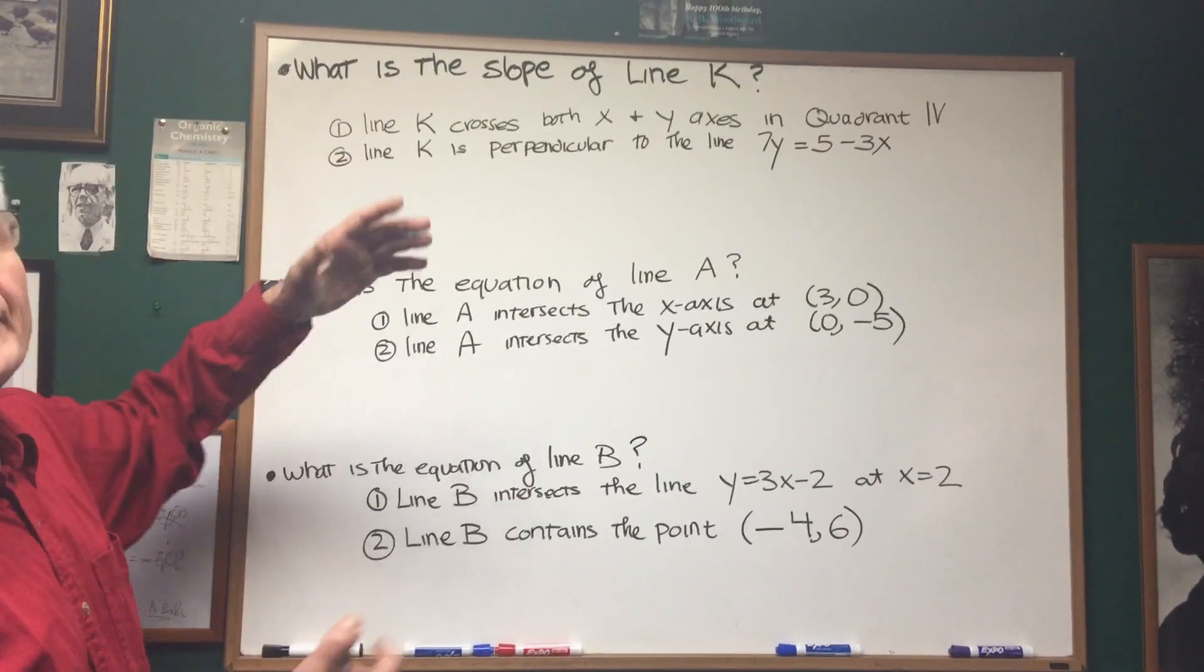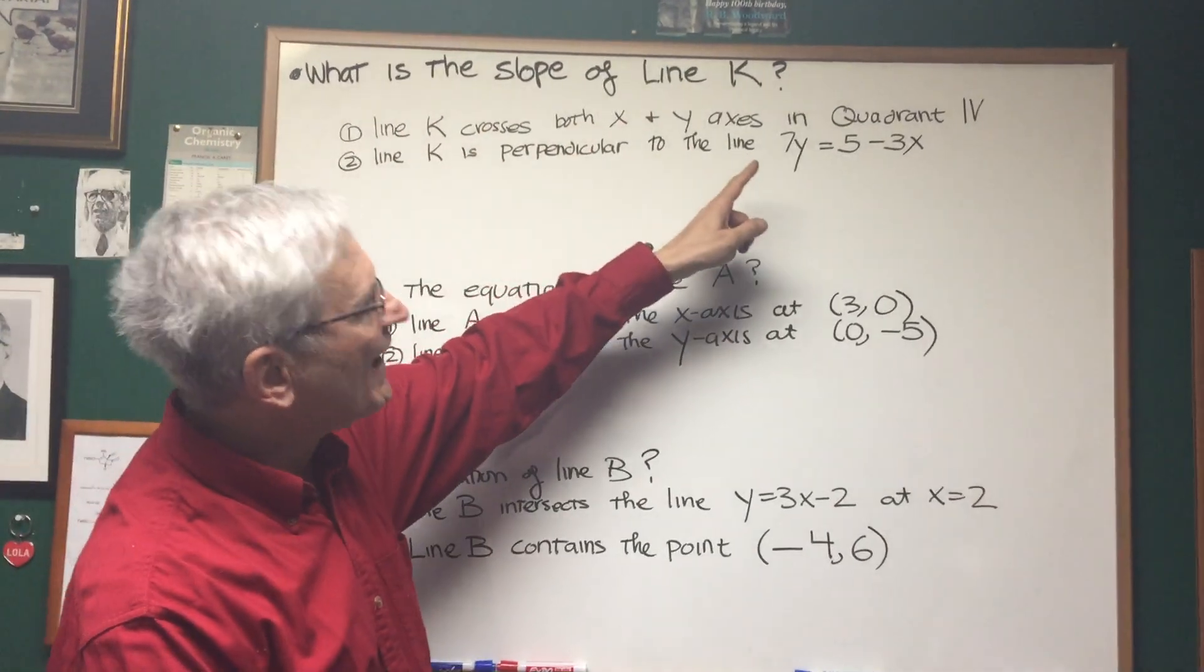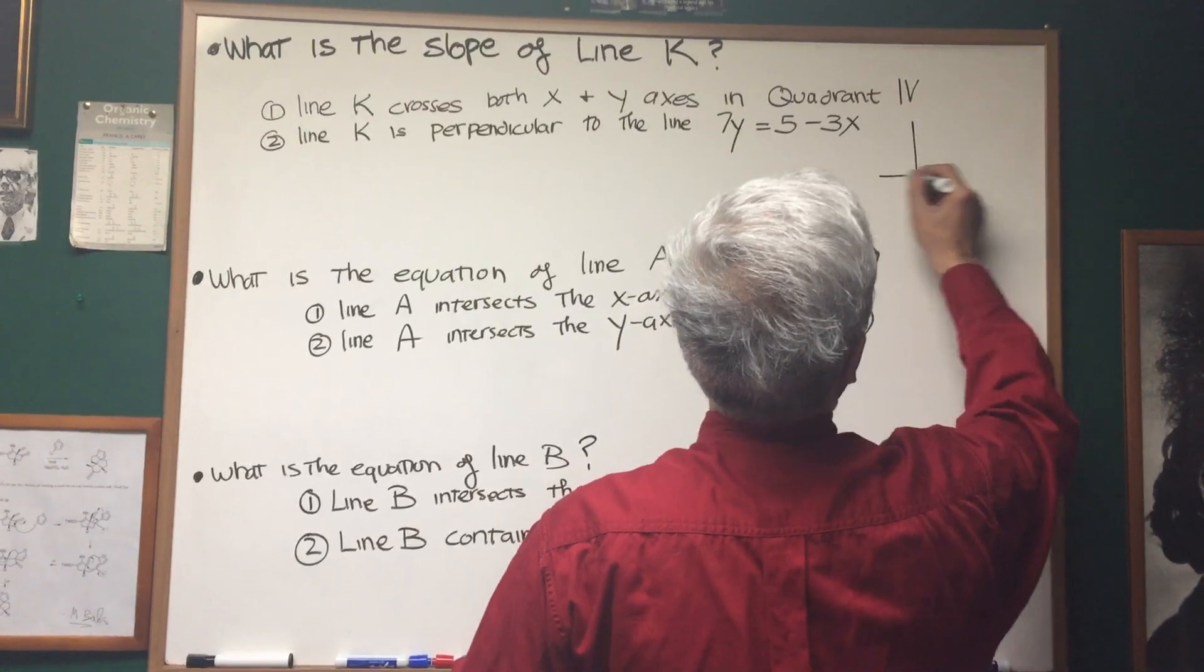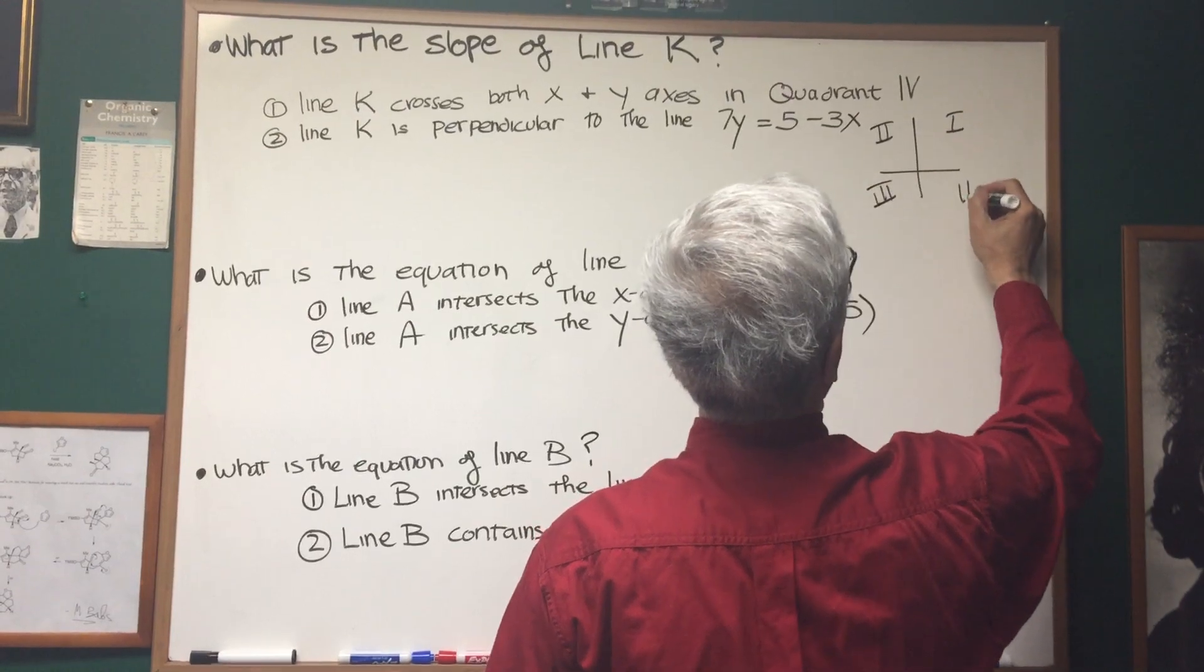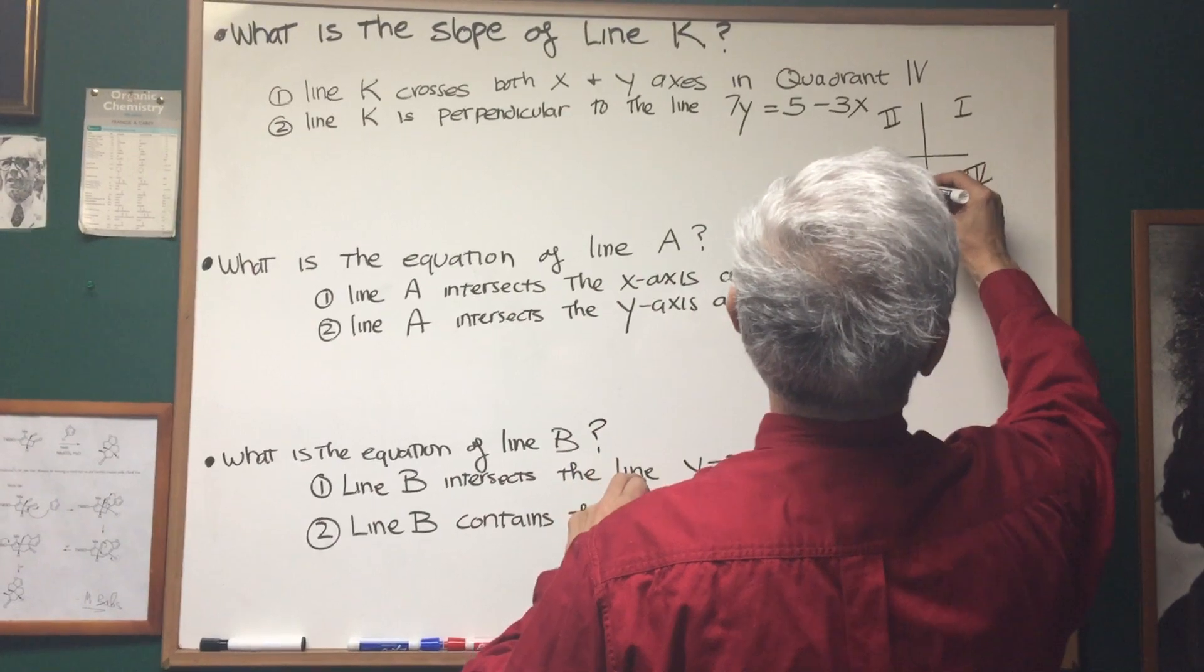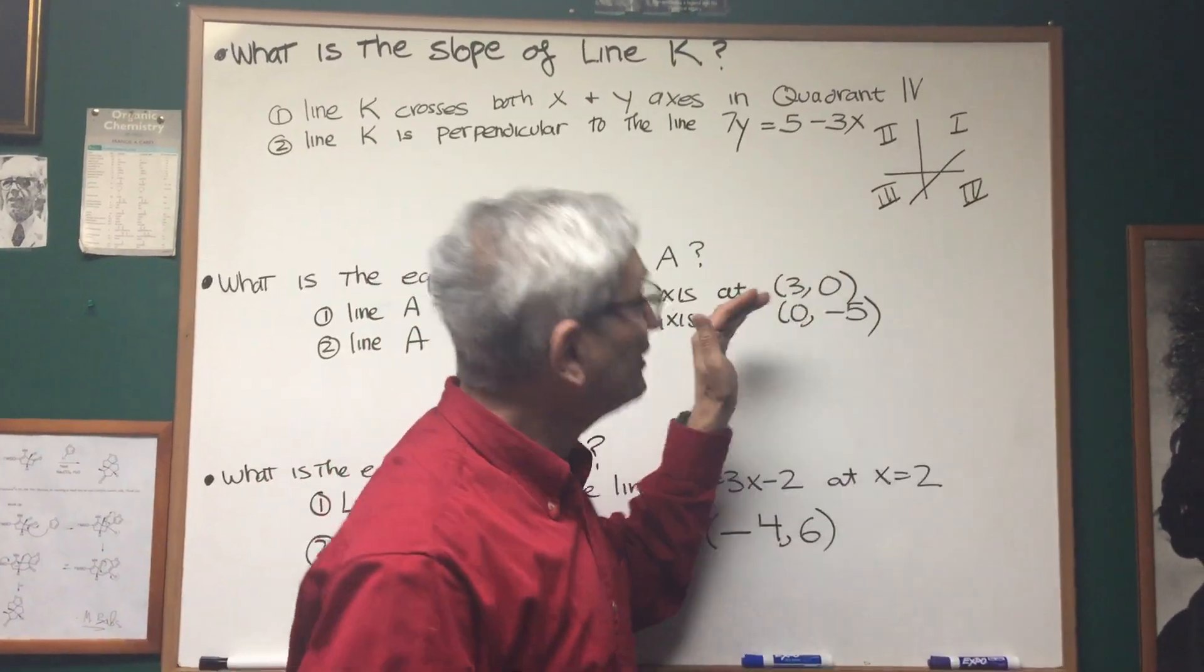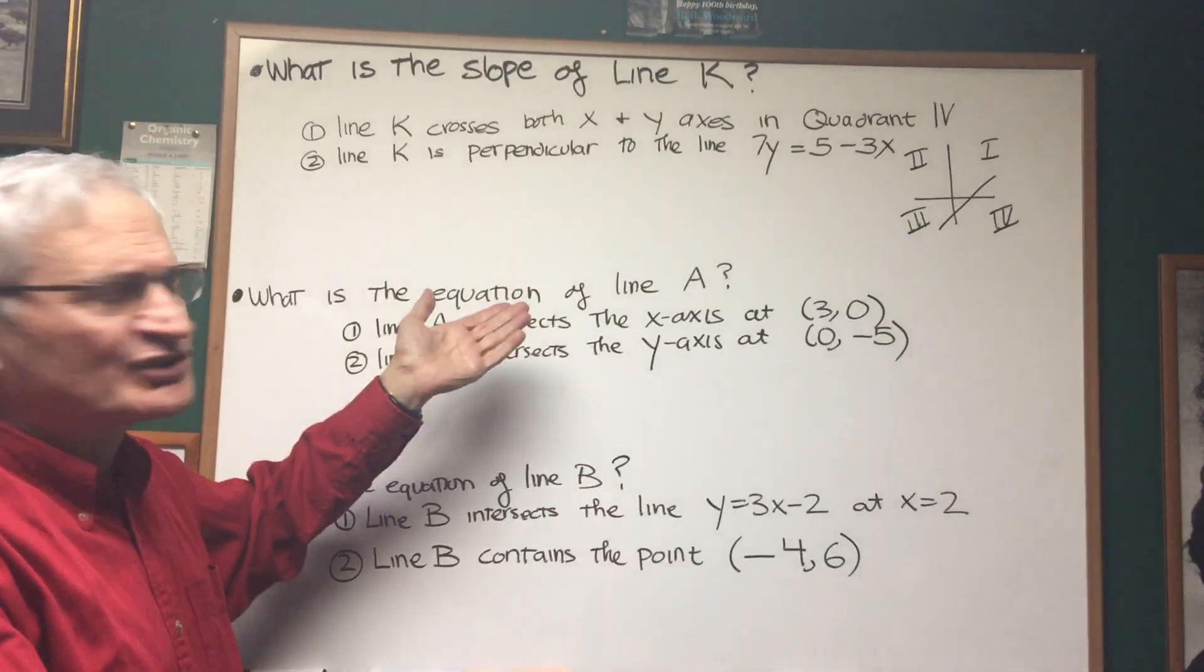Let's do this problem. What is the slope of line K? Statement 1: Line K crosses both x and y axes in quadrant 4. What does that tell us? Well, we want to know the slope of line K. What are the quadrants? Here's quadrant 1, quadrant 2, quadrant 3, and quadrant 4. They go in counterclockwise direction. If the line crosses both x and y axes in quadrant 4, all we can glean from this is that the line has positive slope. It goes uphill as we read the math from left to right. Not sufficient to really answer the question.